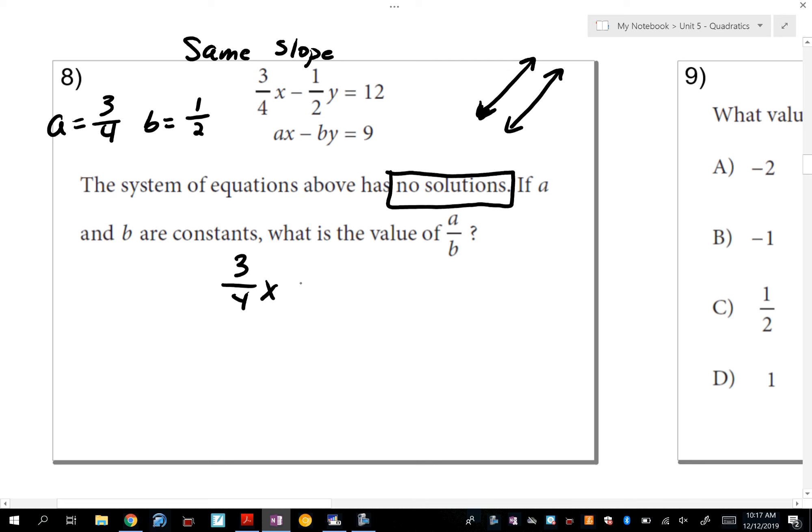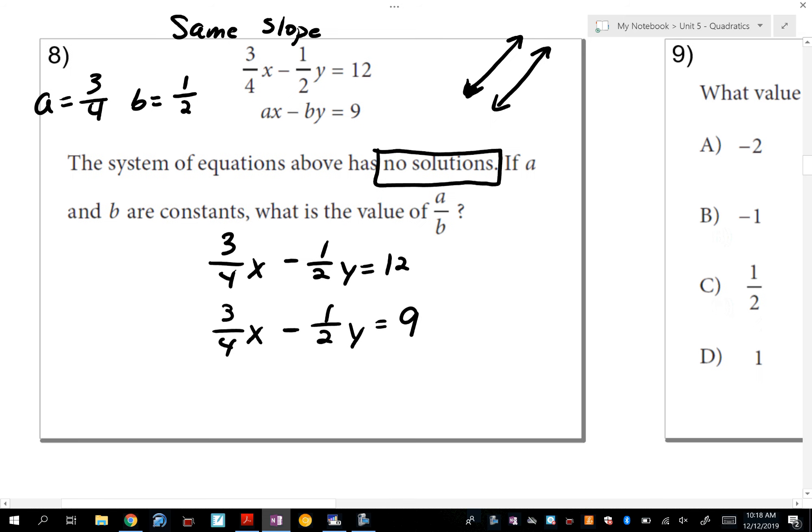So what I'm going to do is I'm going to make a become three-fourths and b become one-half for this second equation. So let me rewrite the first equation. And I'm going to write the second equation. But as I said, I made a into three-fourths and b into one-half. And now you notice if I subtract these two, if I subtract three-fourths x minus three-fourths x, that's the same, so it's zero. Negative one-half y minus negative one-half y is also going to be zero. So I've eliminated both of my variables to get zero. And 12 minus 9 is 3. So this is called a false statement.